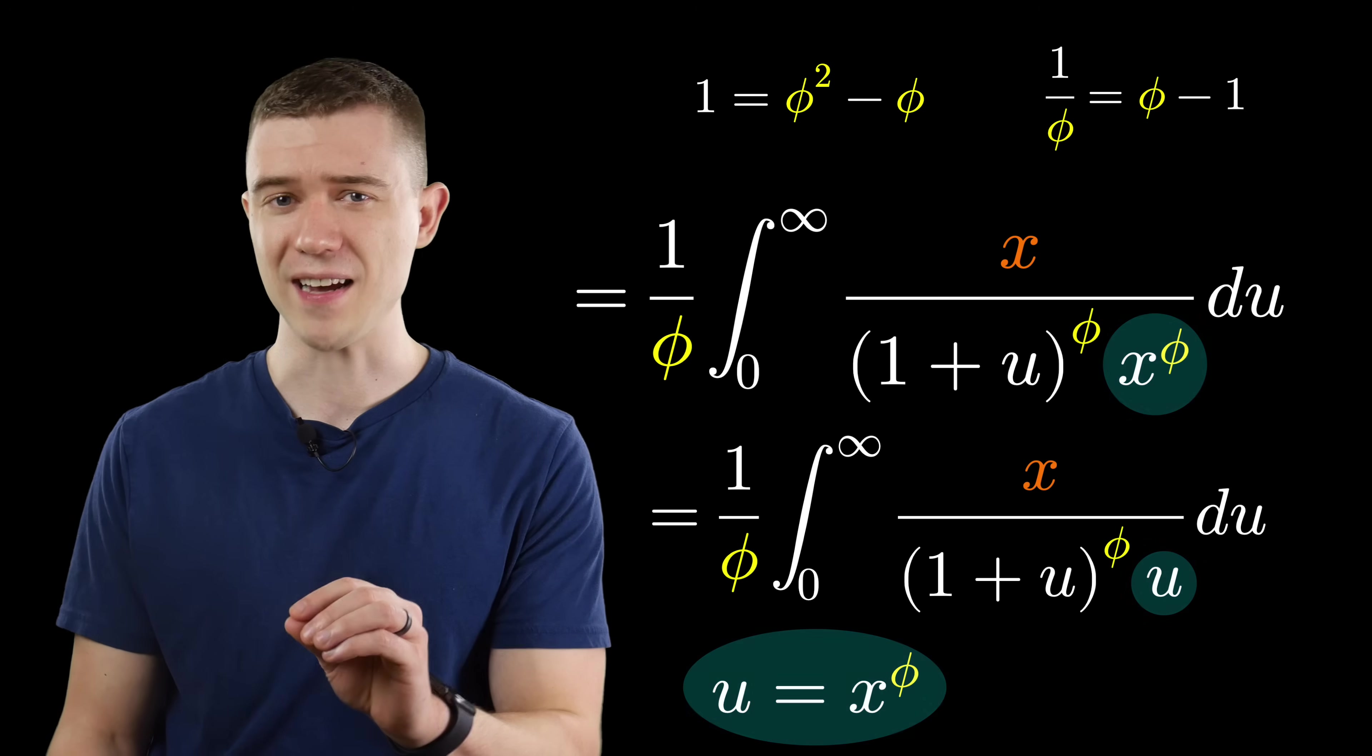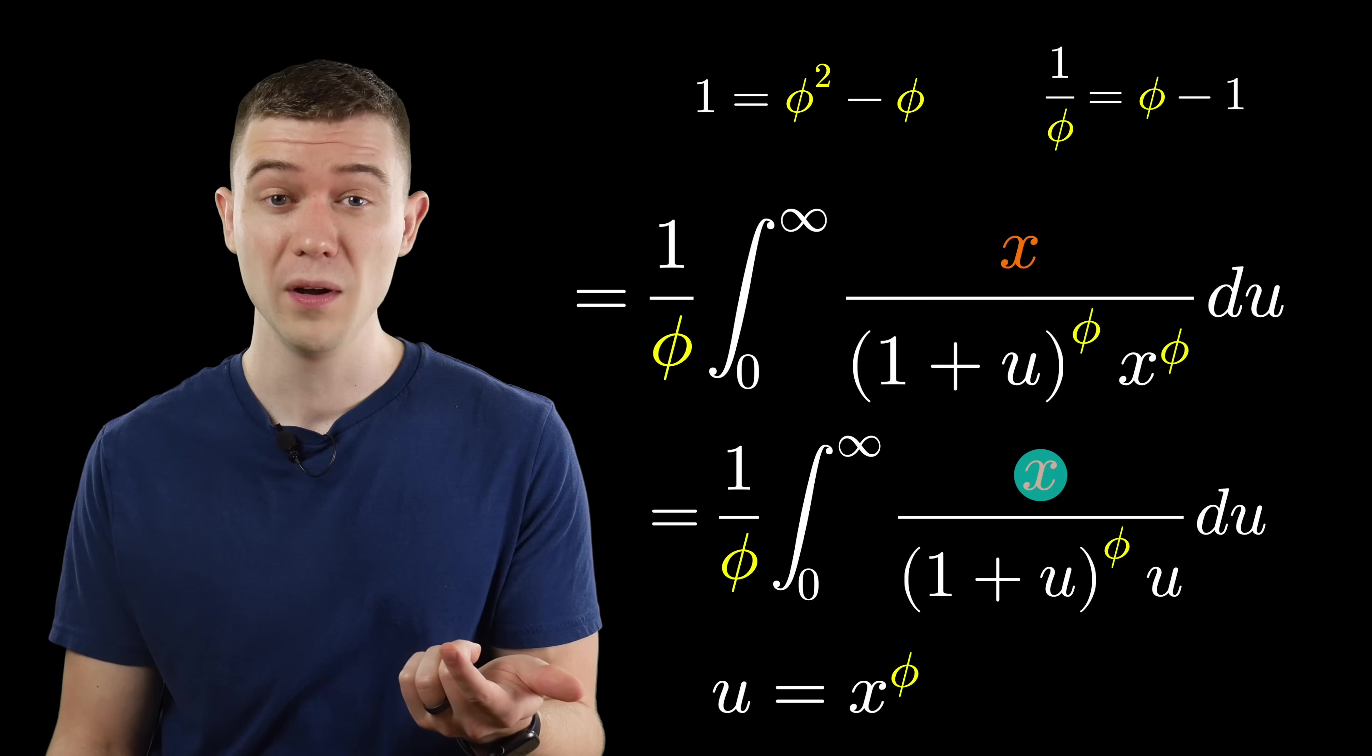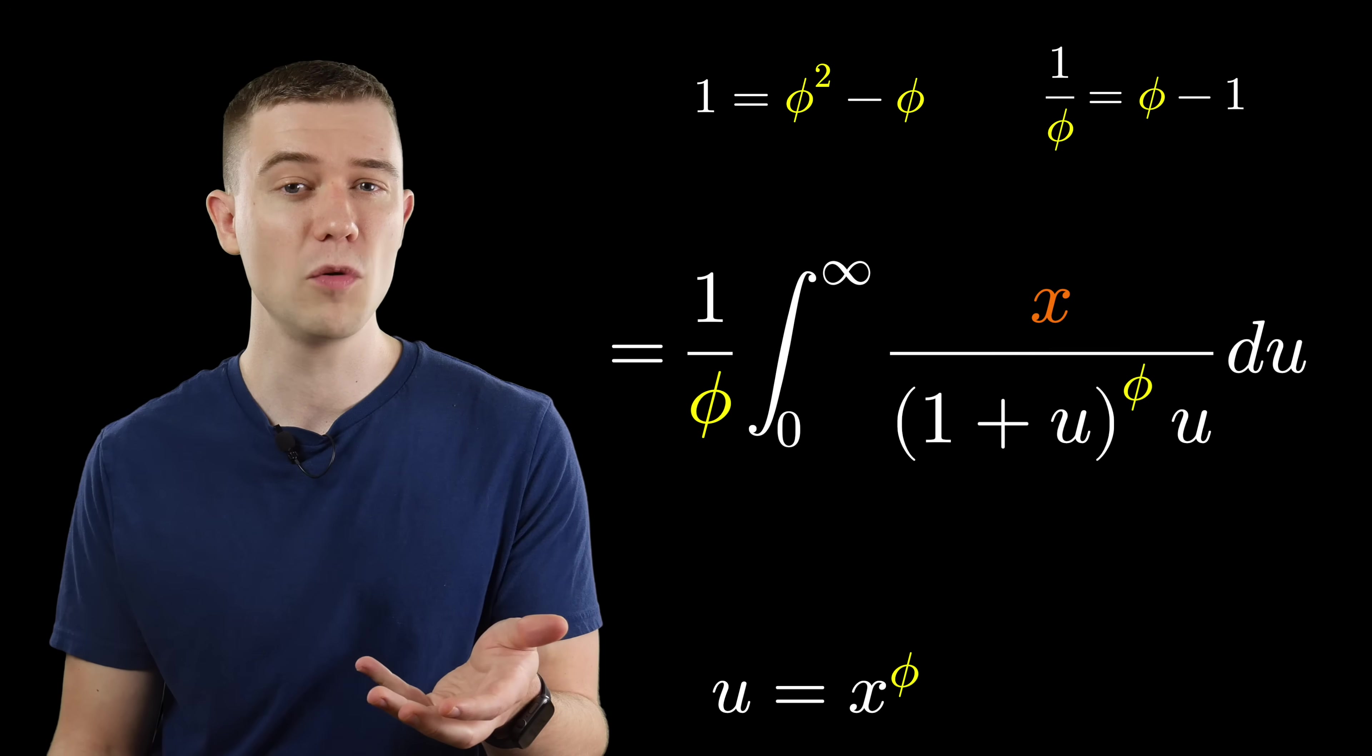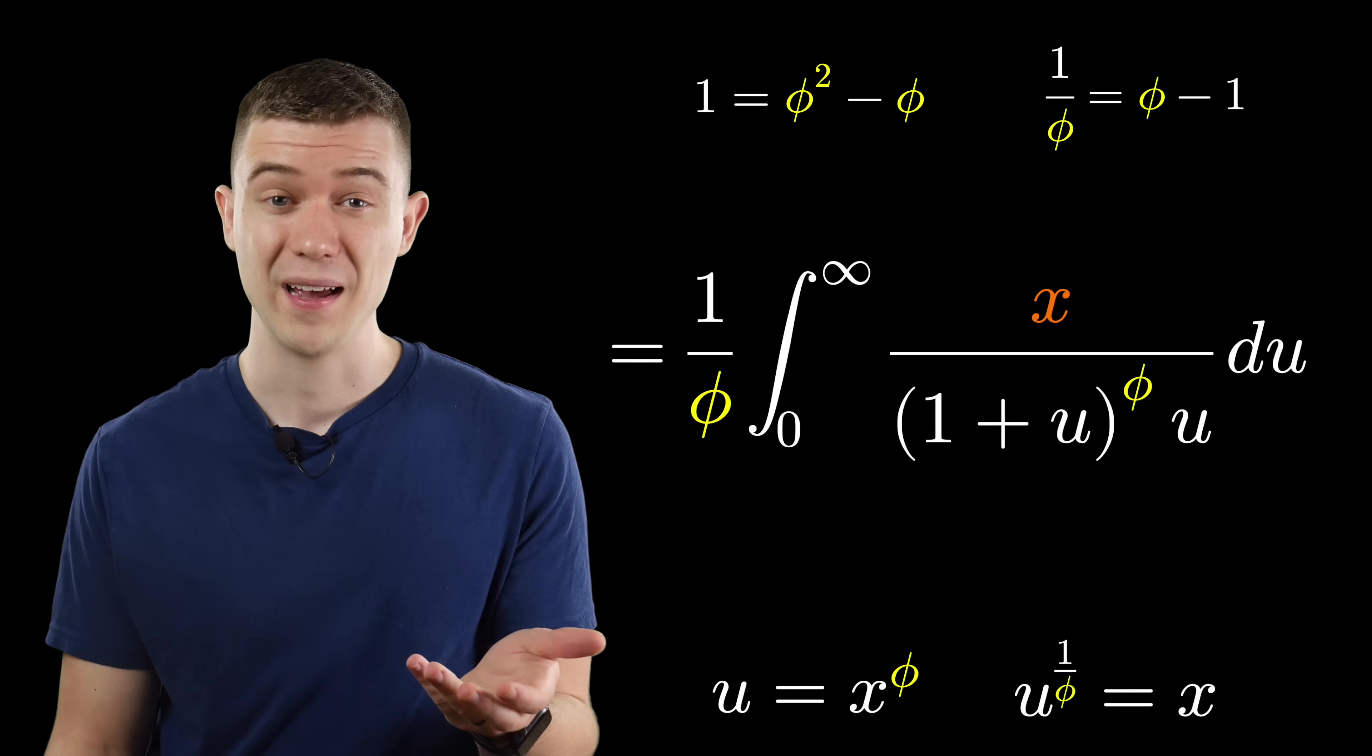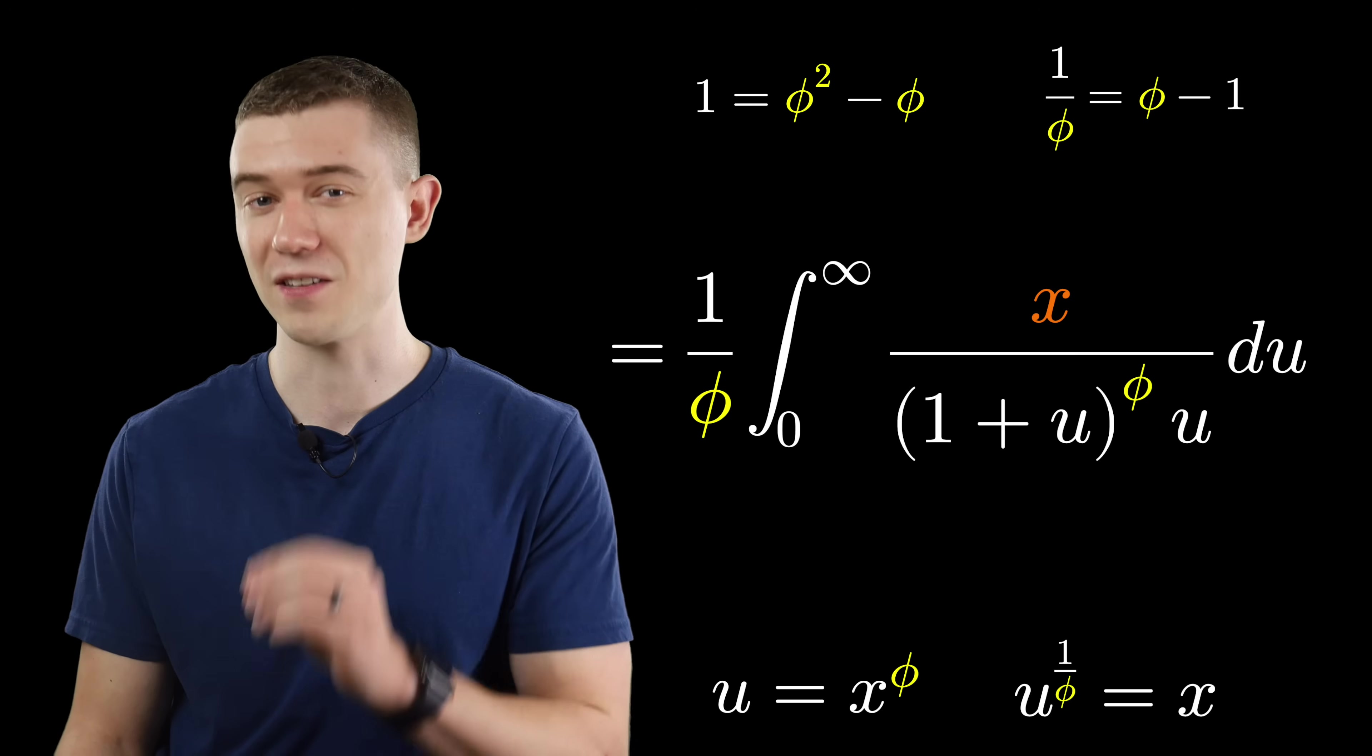But what is just x? We can solve for x in terms of u by taking our substitution equation to the 1 over phi power. Now, u to the 1 over phi is x, and we can complete our substitution.